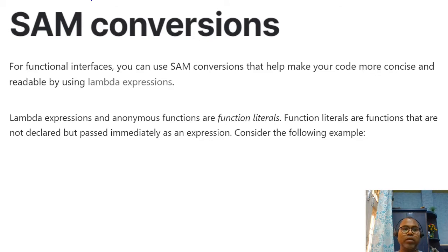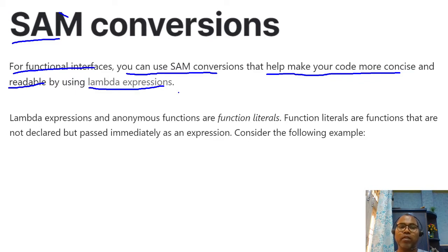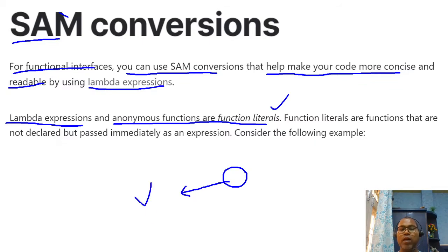Now let's talk about the single abstract method approach for functional interfaces. You can use a single object method which helps make your code more concise and readable using lambda expressions. A lambda expression — also called an anonymous function or functional literal — is something you can assign to a variable, pass to a function, or return from a function.